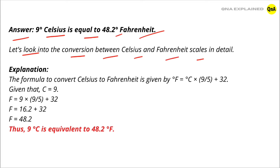The formula to convert Celsius to Fahrenheit is given by: Fahrenheit equal to Celsius into 9 upon 5 plus 32. Given that Celsius equal to 9.